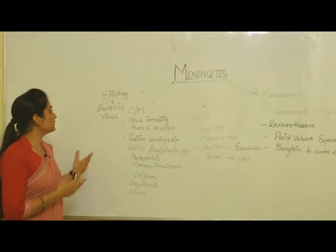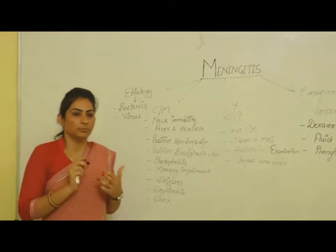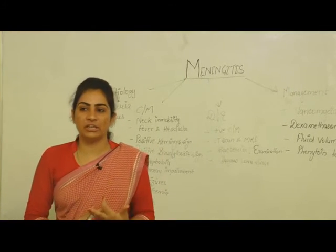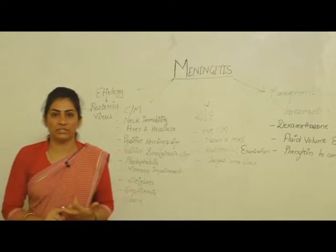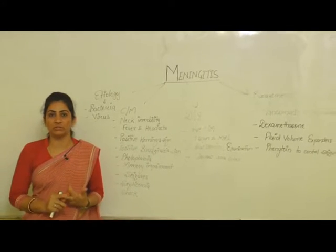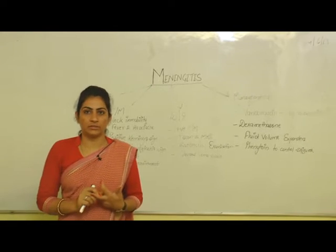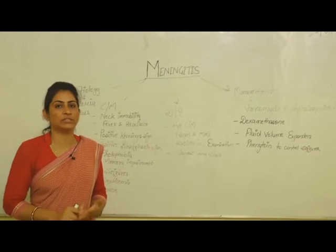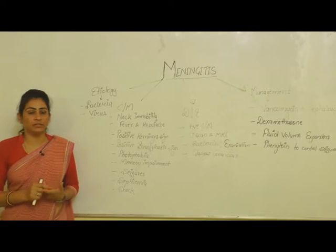Let's see the etiology of Meningitis. The main etiology is bacteria and virus. The main bacteria is Streptococcus pyogenes and Neisseria meningitidis, and the virus includes Haemophilus influenzae.